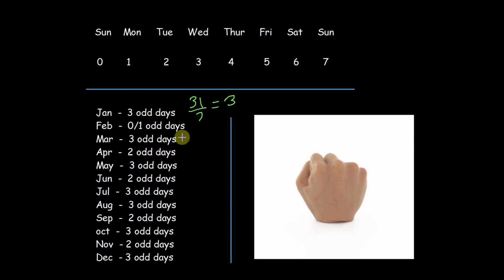For February we know it has 28 days when it is an ordinary year and it has 29 days when it is a leap year, so odd days are accordingly 0 and 1. And the same way we can calculate for rest of the months.